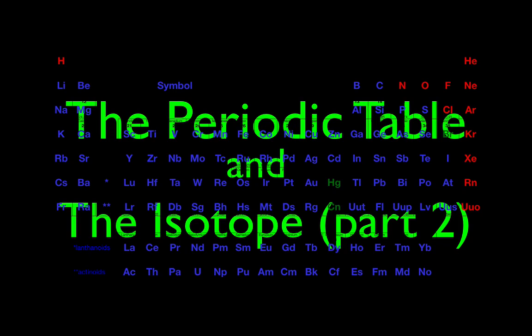Today's video is entitled The Periodic Table and the Isotope, Part 2. In today's video, we are going to go over how to solve and answer some simple questions concerning isotopes. In Part 1 of The Periodic Table and Isotopes, I went over and explained what isotopes are and how to write isotope symbols.